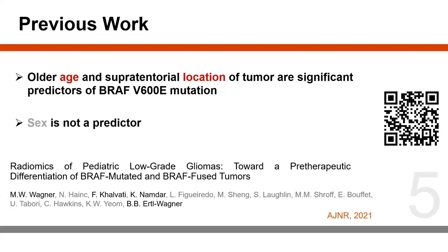We started in 2020, and the first publication came out in 2021, published in AJNR. The method for that study was a radiomics-based analysis. The results showed that older age and supratentorial location of tumors were significant predictors of BRAF V600E mutation, and sex was not a significant predictor.